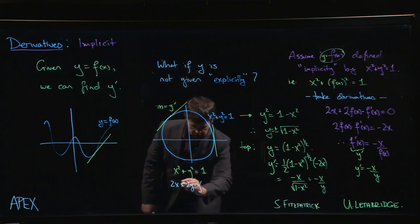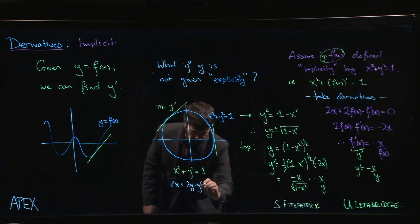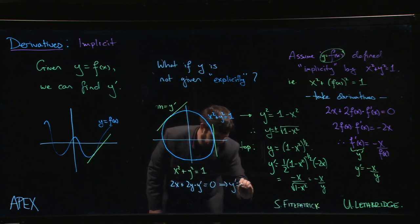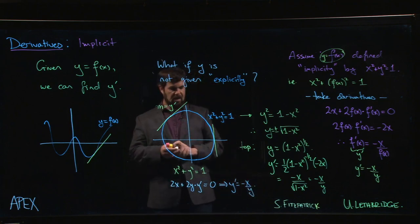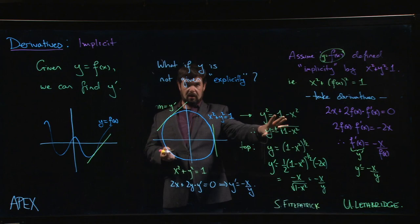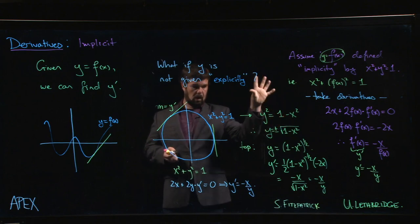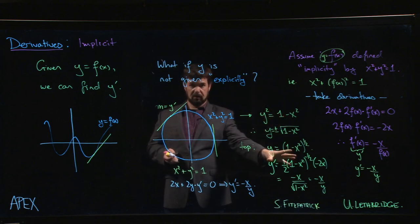So 2x plus 2y times y prime equals zero. We solve for y prime and we get minus x over y. That's certainly less work than solving explicitly for y and taking the derivative using the chain rule.